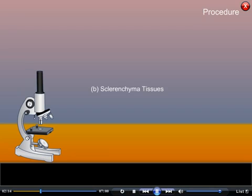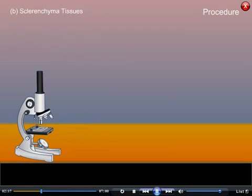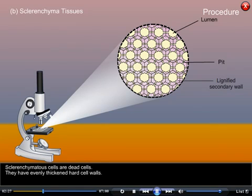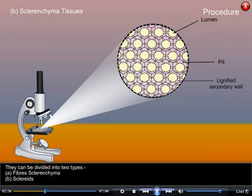B. Sclerenchyma tissues: Sclerenchyma cells are dead cells. They have evenly thickened cell walls with very little or no protoplasm. They have hard, lignified secondary walls.